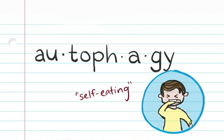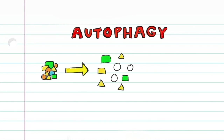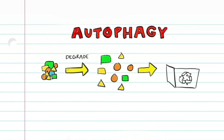This process is called autophagy, which literally means self-eating. Autophagy is a homeostatic mechanism that regulates the amount of harmful molecules and recycling that goes on in the cell. It's essentially the orderly degradation and recycling of cellular components.